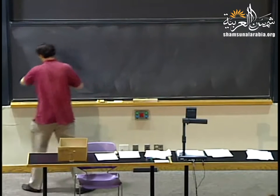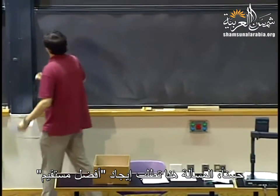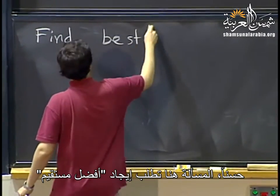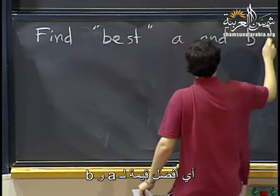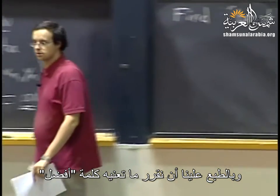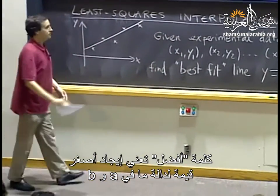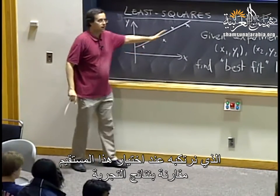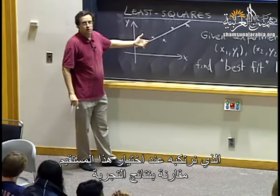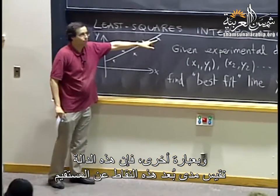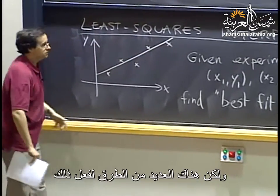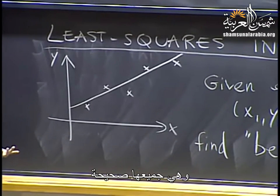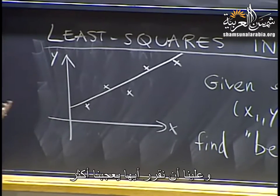The question is: find the best A and B. We have to decide what we mean by best. Best will mean that we minimize some function of A and B that measures the total error when choosing this line compared to the experimental data — roughly speaking, how far the points are from the line.